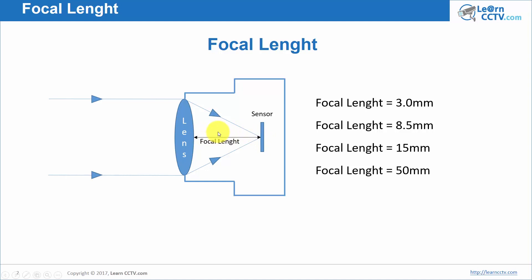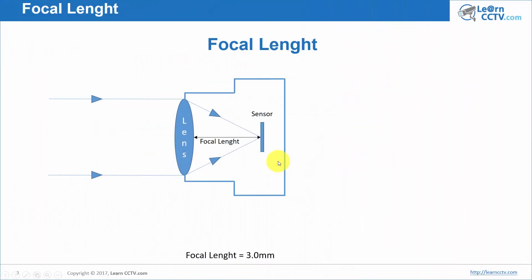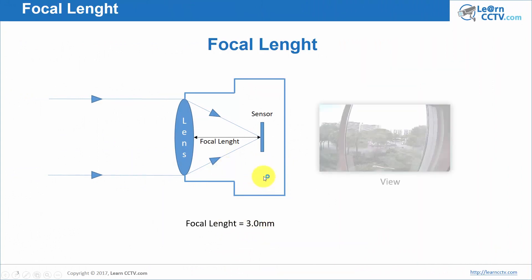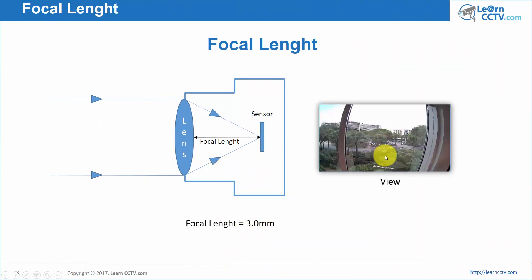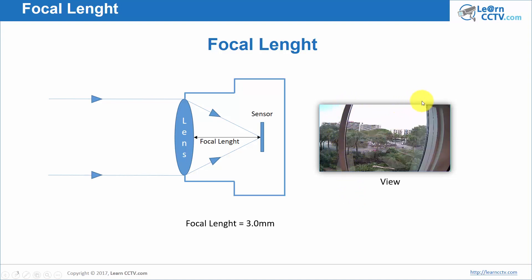Let's imagine we have a focal length of 3 millimeters. I have this kind of view — my object is pretty far away from the camera. The camera is inside a building, pointing through a window. I can have image formation from the window area because the camera is pretty close to the window and it's using a 3 millimeter focal length, which is pretty normal in CCTV.